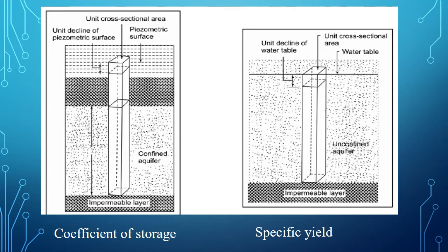In the case of a confined aquifer, you can see the water bearing formation of the aquifer material is bounded between two impermeable layers — one layer at the top and another at the bottom. Whatever aquifer material is inside between these two impermeable layers, the aquifer is called a confined aquifer. At the top you can see the unit decline of the piezometric surface and unit cross-sectional area. To decline the piezometric head up to unity from a unit cross-sectional area, the amount of water released from such aquifer is called the coefficient of storage. The term coefficient of storage is used for confined and semi-confined aquifers, while specific yield is used for unconfined aquifer only.